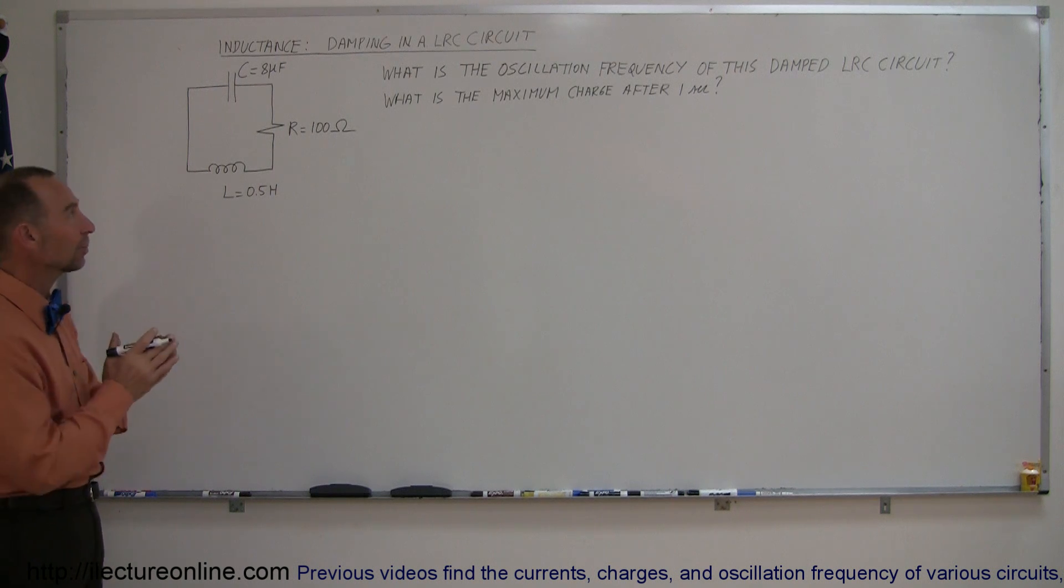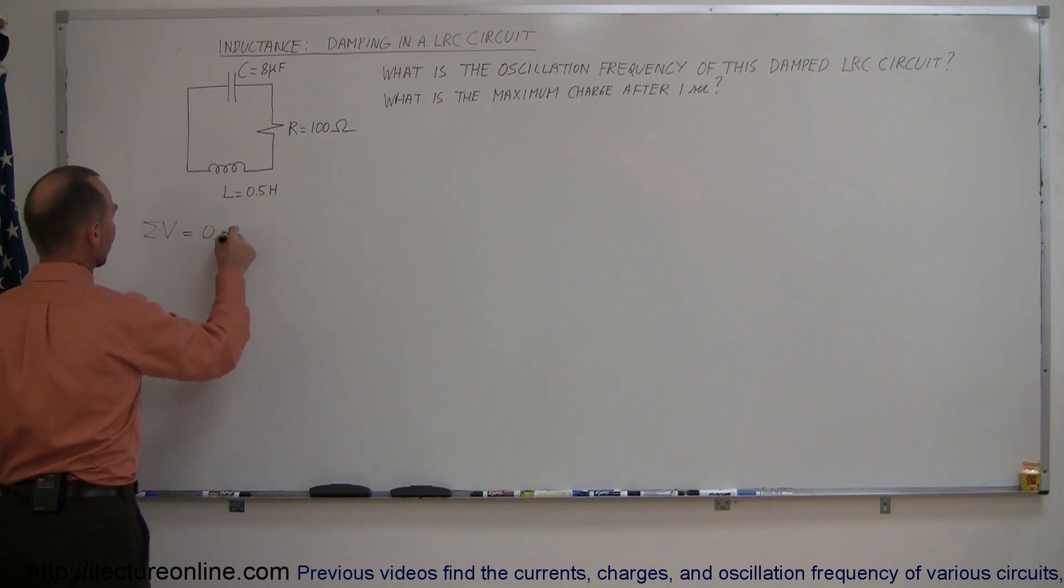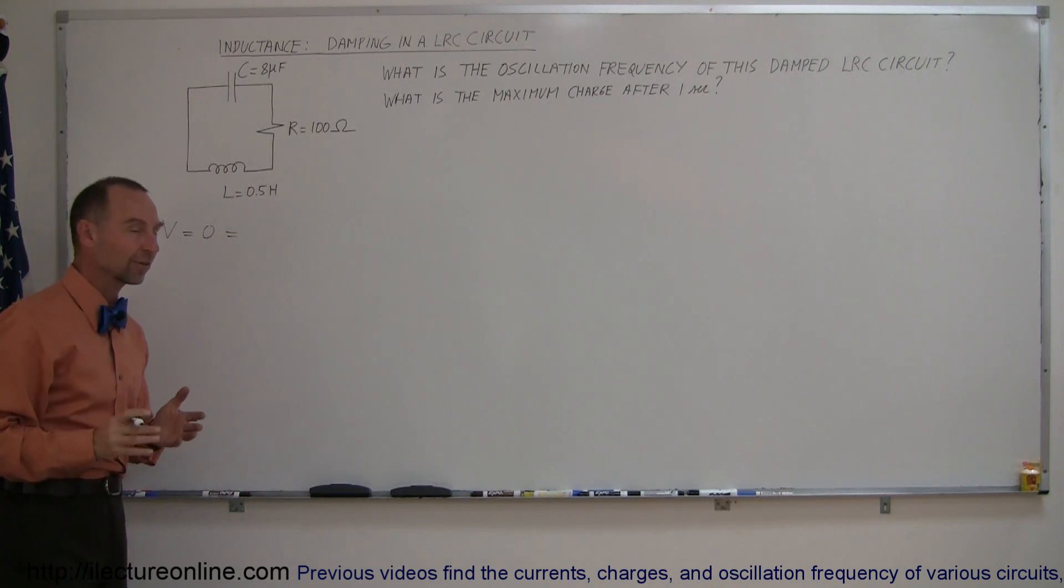So again from a standard perspective we're going to use Kirchhoff's rules to add up the voltage drops around the circuit. So the sum of all the voltages around the circuit should add up to zero according to Kirchhoff's rules, so let's figure this out.